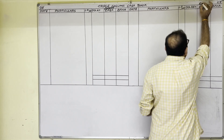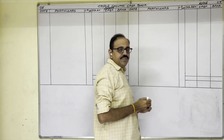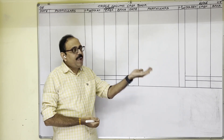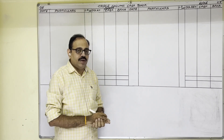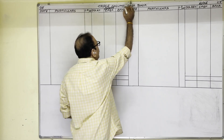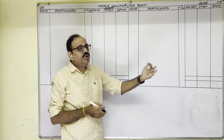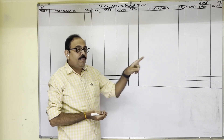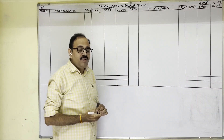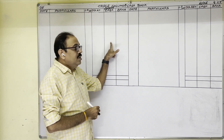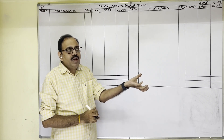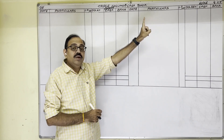For the bank column, the hint is: because of a transaction, if our bank balance is increasing, write on the debit side bank column. For example, if we deposit money into bank, bank balance increases — debit side bank column. If we withdraw money from bank, bank balance decreases — credit side bank column. So for cash column: cash coming in is debit side; cash going out is credit side. For bank column: balance increasing is debit side; balance decreasing is credit side.